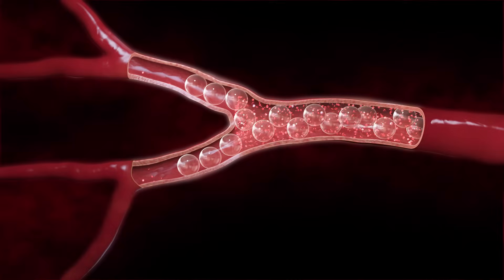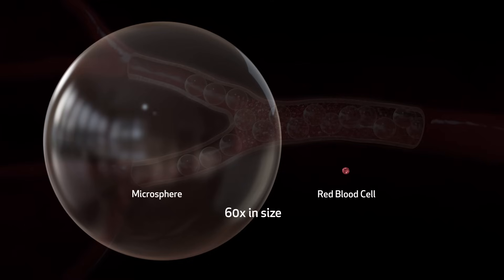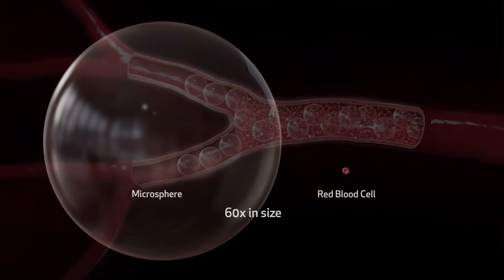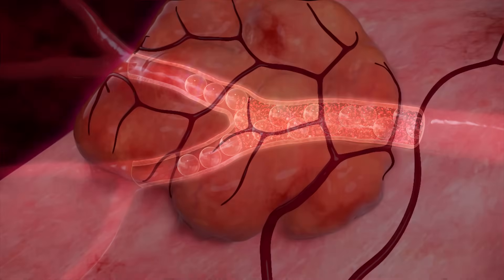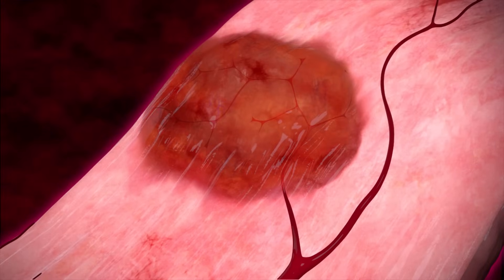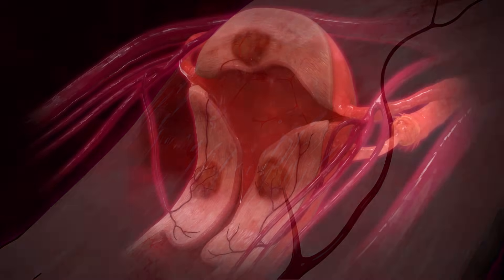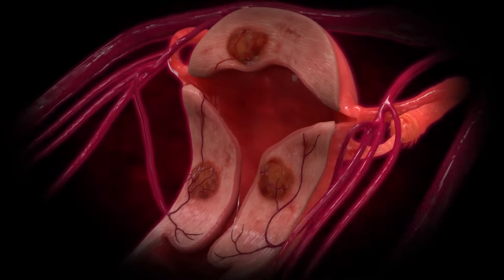The procedure is repeated in the uterine artery on the other side to make sure that all blood supply to the fibroids has been cut off. All fibroids are treated simultaneously. Once the blood supply to the fibroids has been blocked, the fibroids begin to shrink. There is no scar tissue and minimal blood loss with UFE. Recurrence of the fibroids with uterine fibroid embolization is rare.